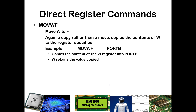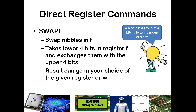MOVWF moves a value from W into a special function register. Typically, to load a constant into a special function register, you must first move the literal into W using MOVLW, then use MOVWF to transfer it to the target register, such as Port B. SWAPF swaps the nibbles in a register — since each 8-bit register has an upper and lower nibble, SWAPF exchanges them. Using comma 0 places the swapped result into W without changing the register; using comma 1 stores the result back into the register itself.